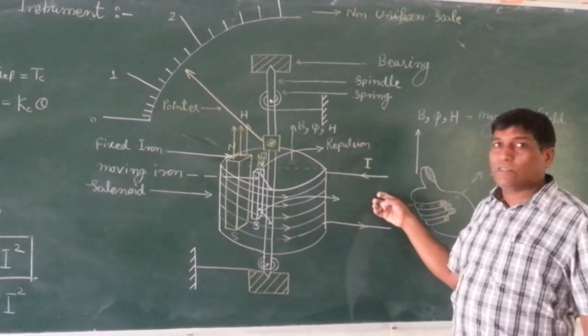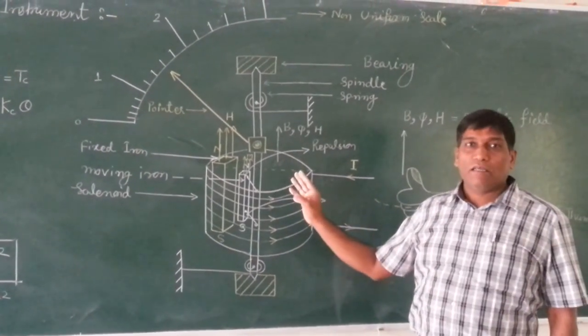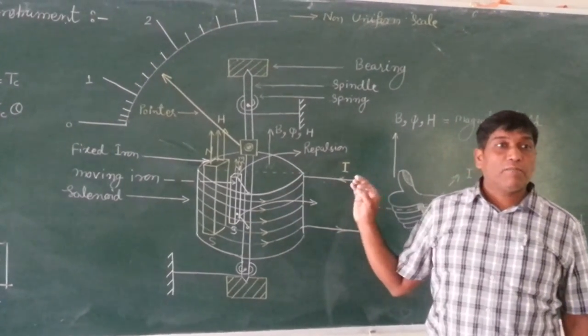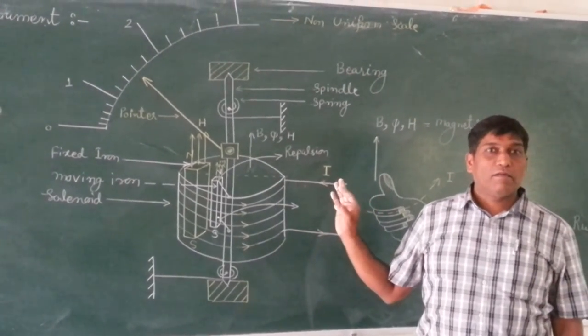Thus, depending on the current, the deflection is there. If amount of current will be more, deflection will be more. And this is the repulsion type moving iron instrument. Very simple.